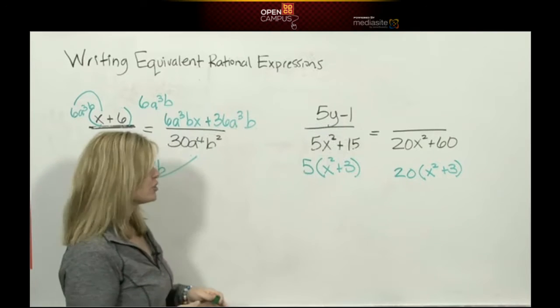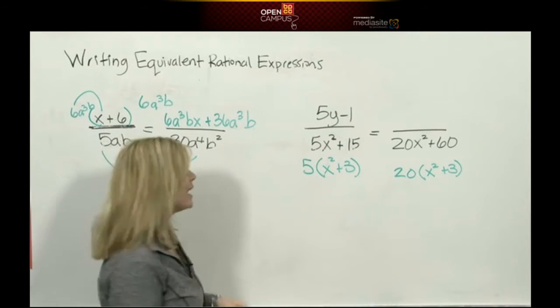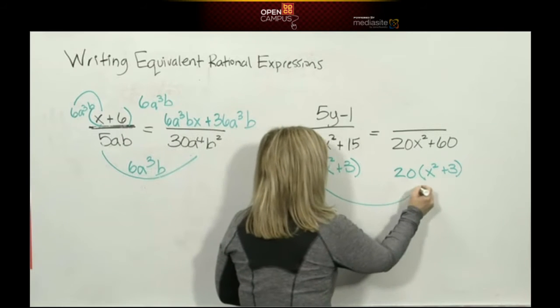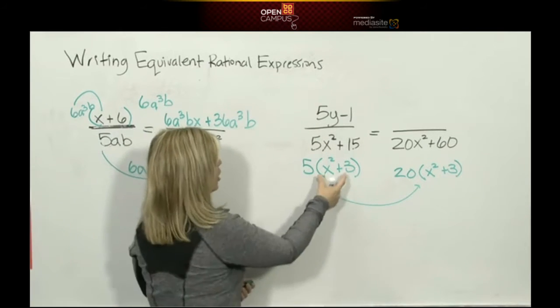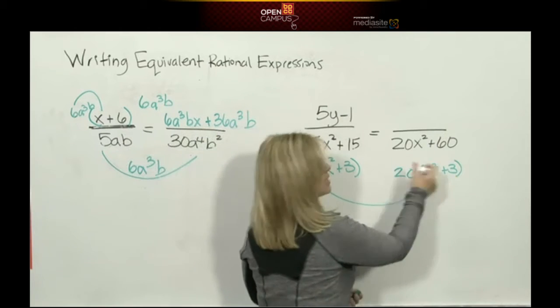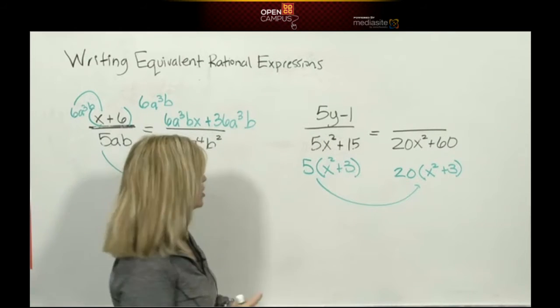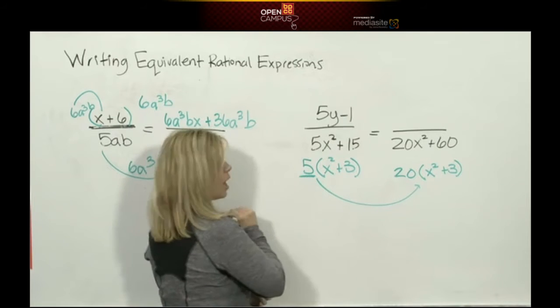Now that your denominators are in factored form, it is so easy to see what we multiplied to get from the original to the new. If you look, what's inside the parentheses did not change. What changed is the coefficient. 5 became the coefficient 20.